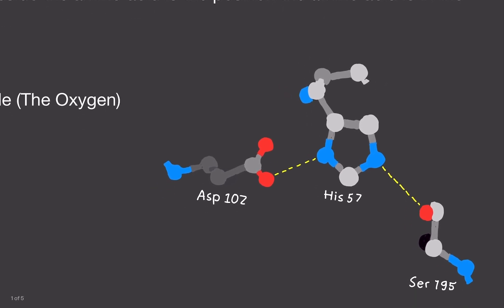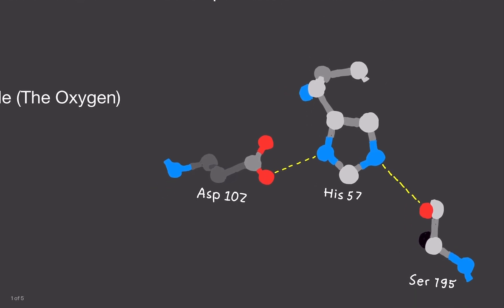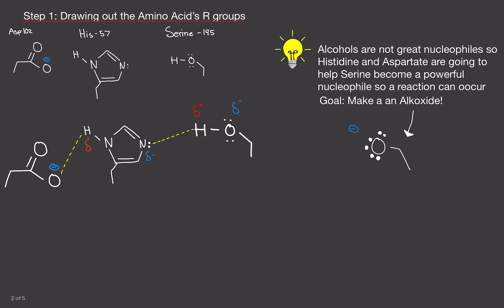This figure here is specifically the 3D model or the ball and stick model of the chymotrypsin enzyme. Notice it has the aspartate on the left, the histidine in the middle, and the serine on the right. So let's do this. Step one. The first thing you need to do is draw out the amino acids R-groups.